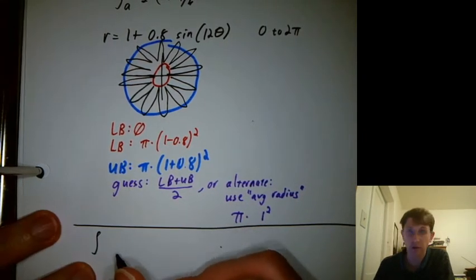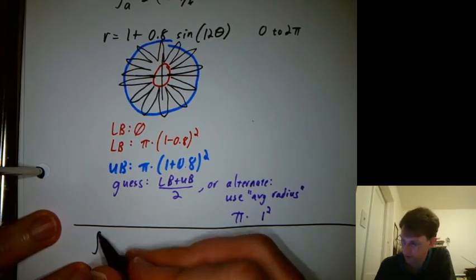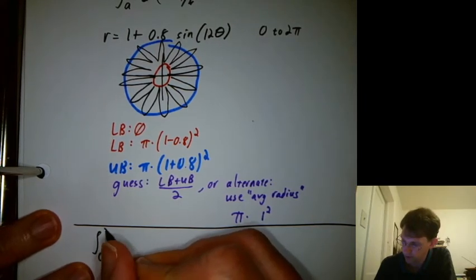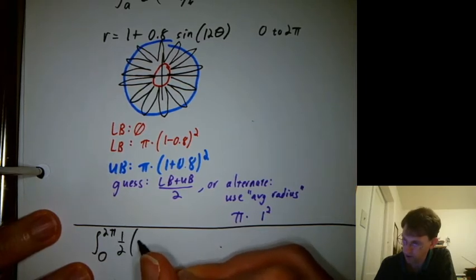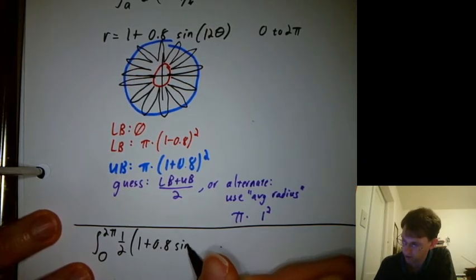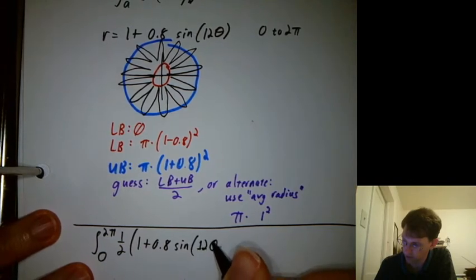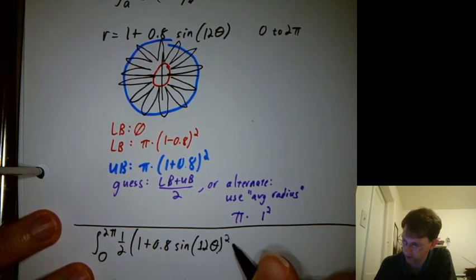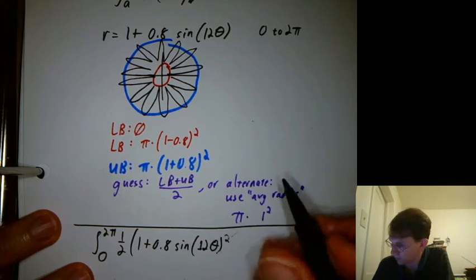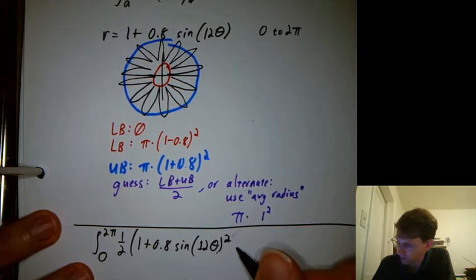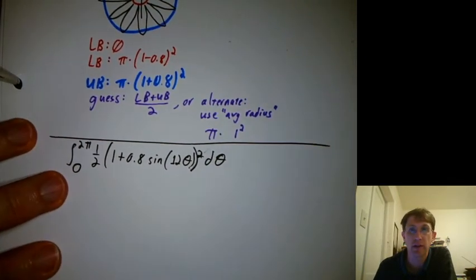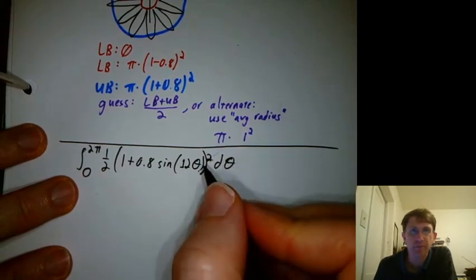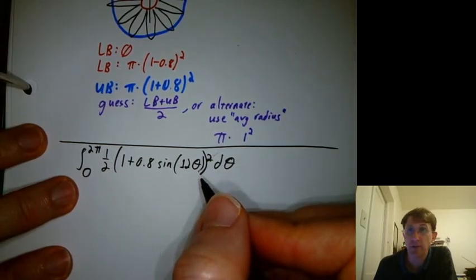So we have the integral. Try to write it before I write it here. 0 to 2 pi. One half times the radius function, which is 1 plus 0.8 sine of 12 theta squared. D theta. Does this look like a fun integral to do? Depends on your definition of fun, I guess.